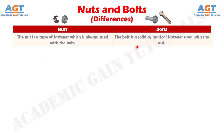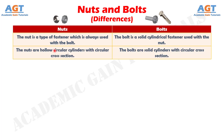Difference number 1: The nut is a type of fastener which is always used with the bolt, whereas the bolt is a solid cylindrical fastener used with the nut. Number 2: The nuts are hollow circular cylinders with circular cross section, whereas the bolts are solid cylinders with circular cross section.